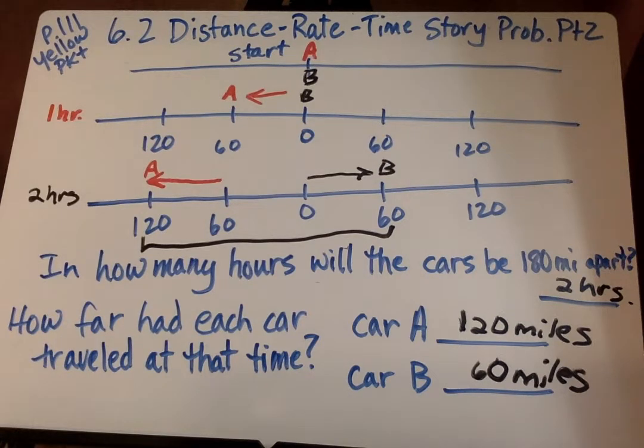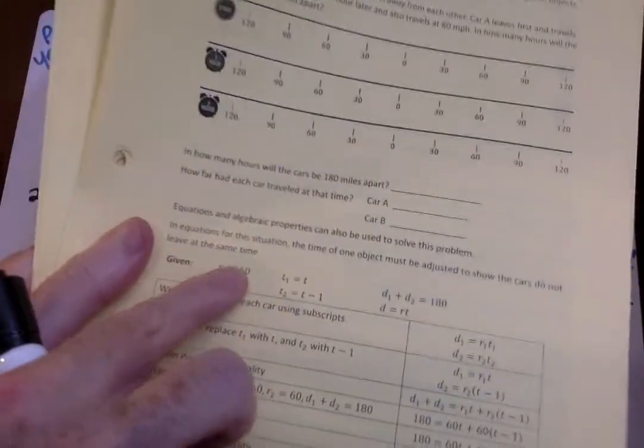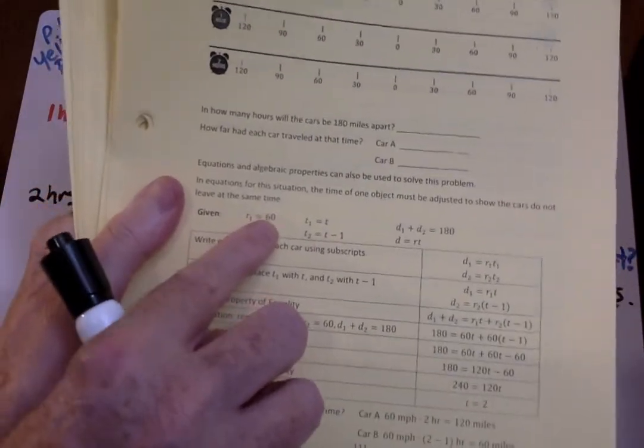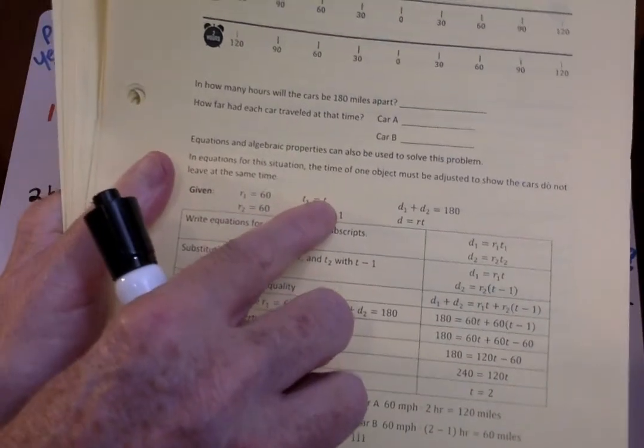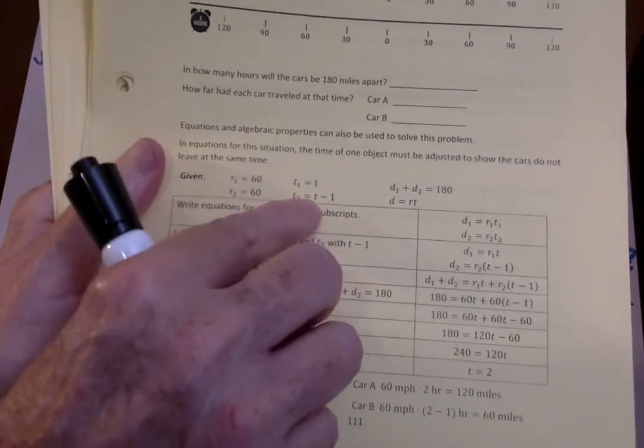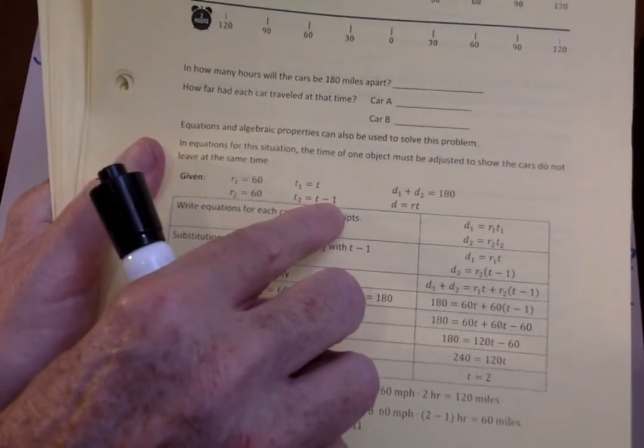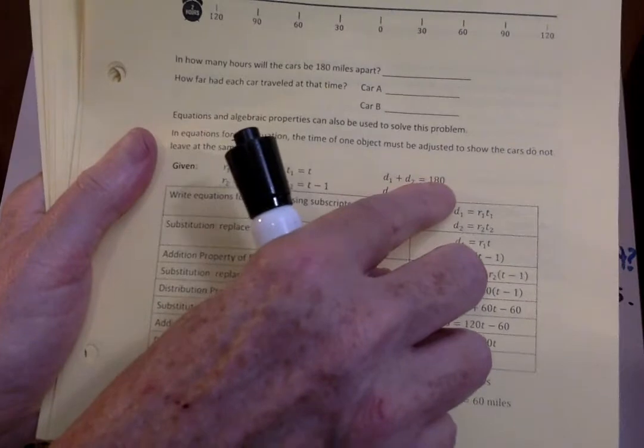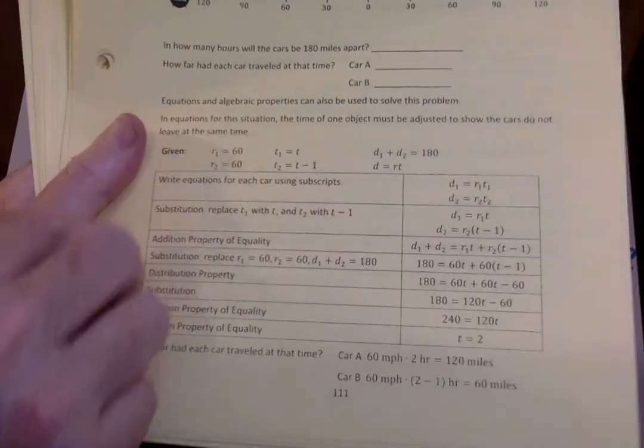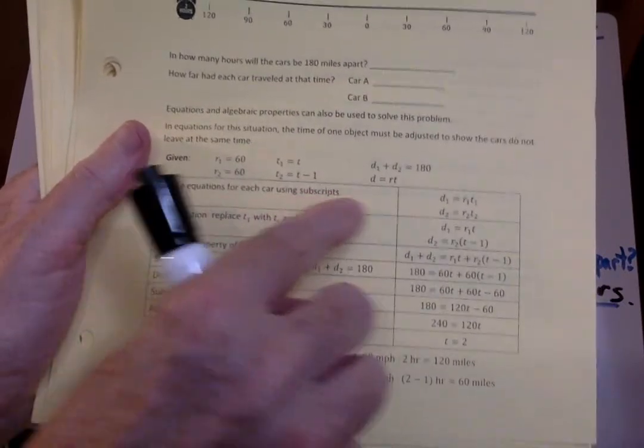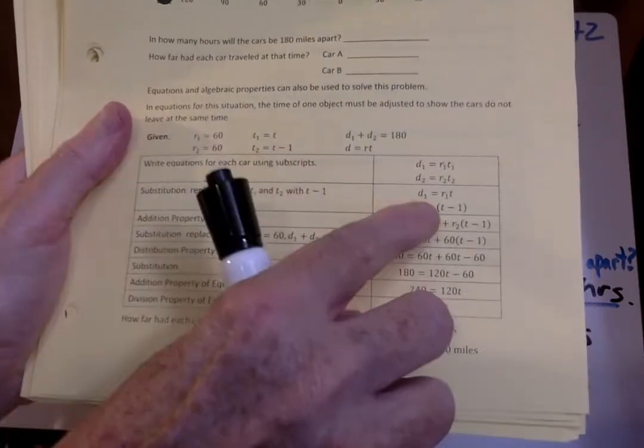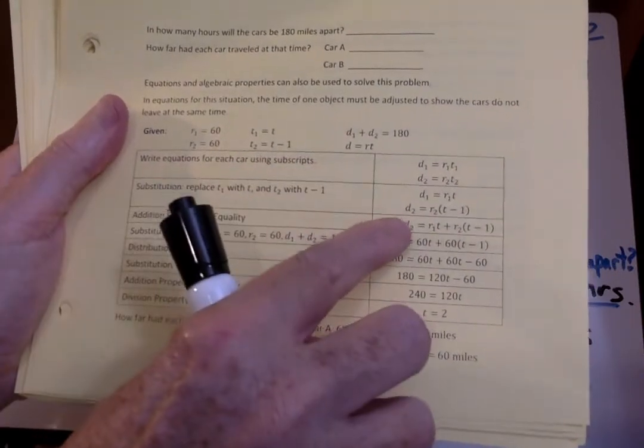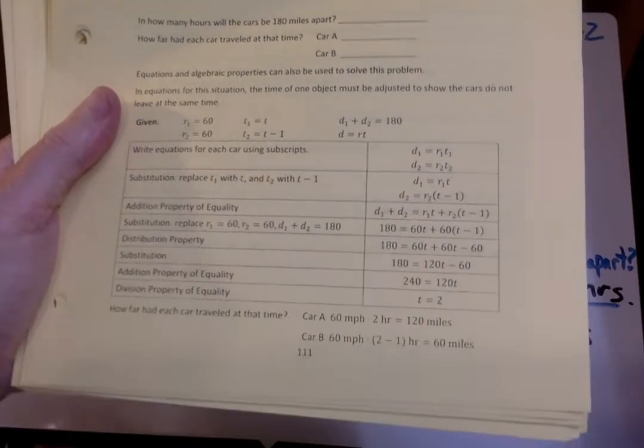So the tricky part is the T minus one, when the second car starts traveling an hour later. So car one is 60 miles per hour. Car two is also 60 miles per hour. Time one for the first car is T. Time two is when the second car leaves, it's going to be T minus one hour. They went an hour later, so it's T minus one. Now we're adding the two distances of the two cars. We want to know when they're 180 miles apart. And we know that distance equals rate times time. So we write equations for each car using the subscript. The distance of car one is R1 times T1. Distance of car two equals R2 times T2. Now our distance is R1 times T for the first one. The second one, it's R2 with the rate times T minus one because they went an hour later.